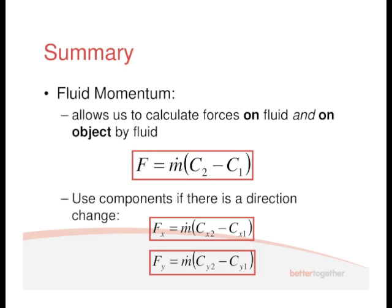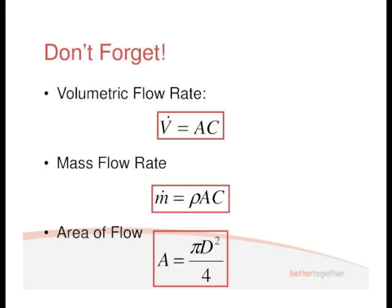Lastly, there are a few things you shouldn't forget from last semester. Volumetric flow rate: V-dot equals AC — fundamental. Mass flow rate is that volumetric flow rate times the density, so it's rho times A times C. These are very important to remember. To work out the area, we often substitute pi D squared upon 4 into the equation instead of A. The area is pi D squared upon 4 — that's pi R squared, the same thing — because often you'll be given a diameter and not a radius.